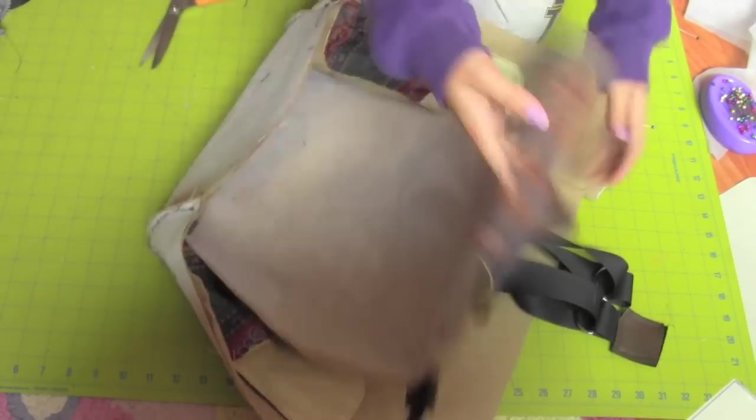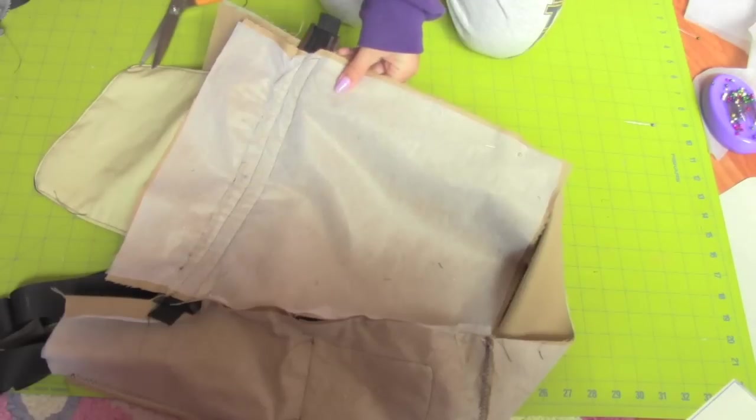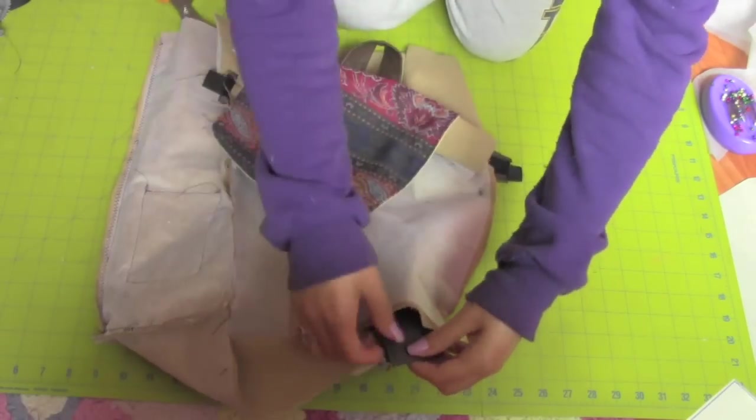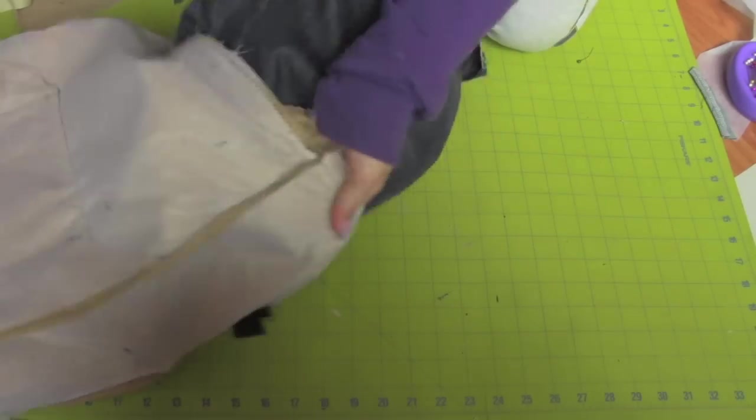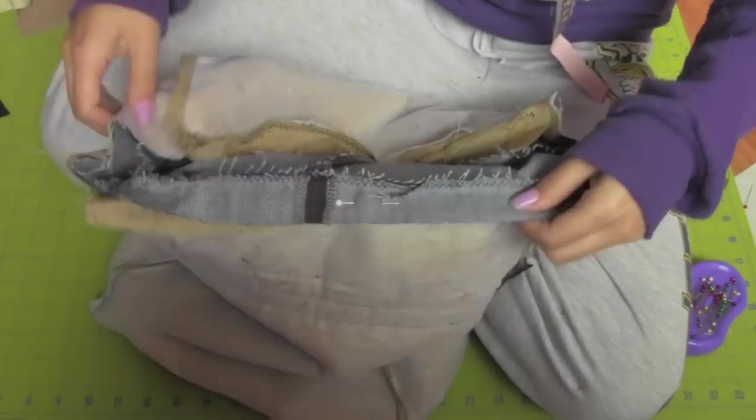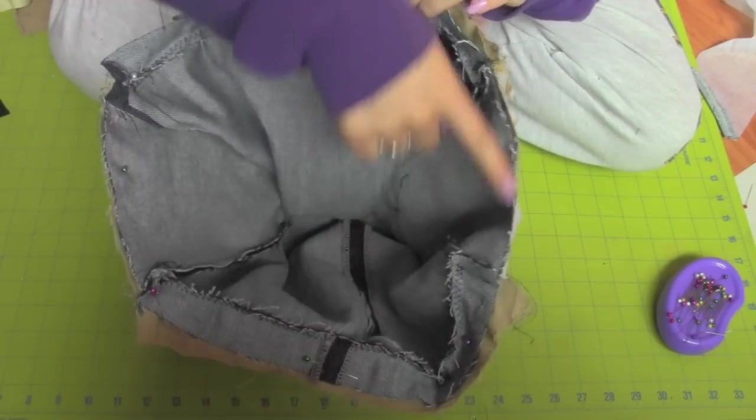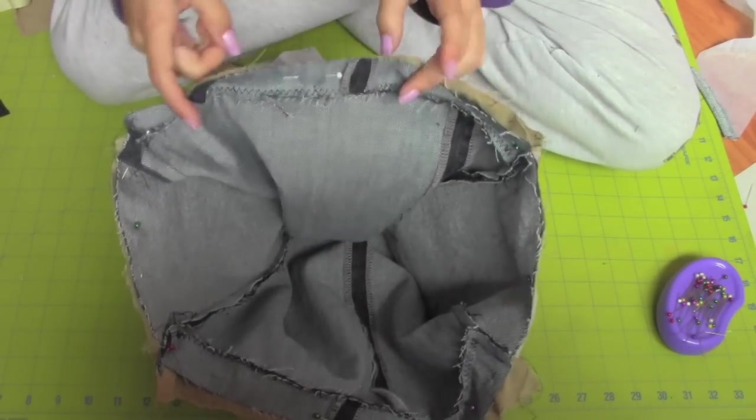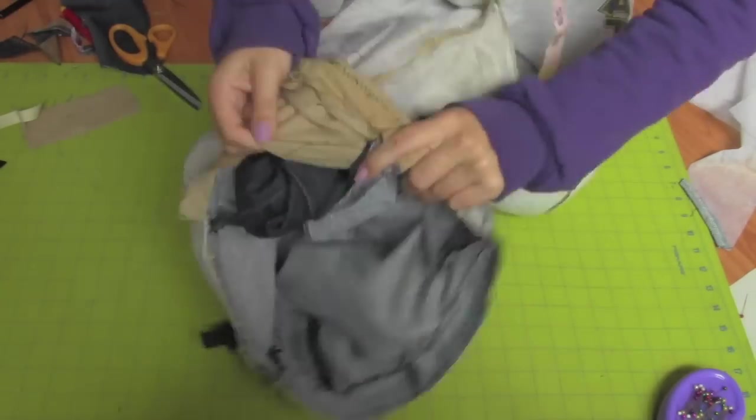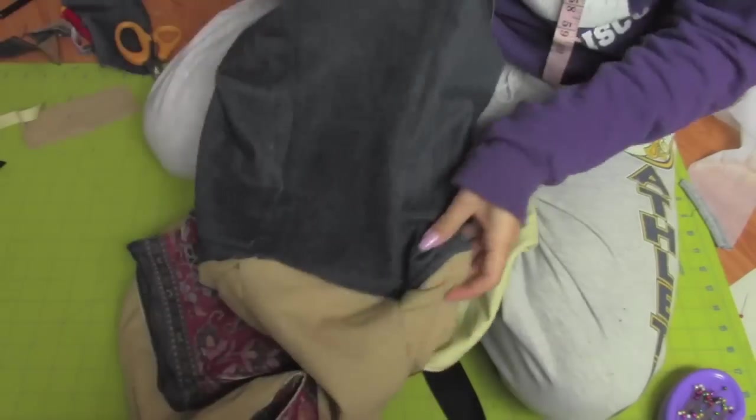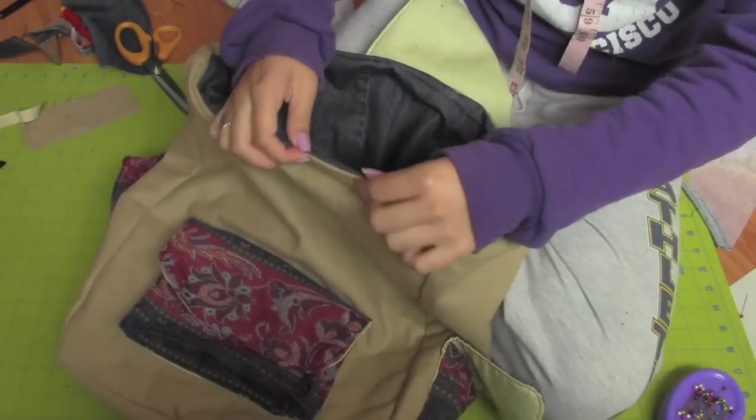Now sew the back piece right sides together on all the sides. Place the straps at the bottom making sure they're not twisted. After sewing the exterior, place the interior right sides together with the exterior and sew the top of the back leaving an opening to flip it inside out. Top stitch along the seam.